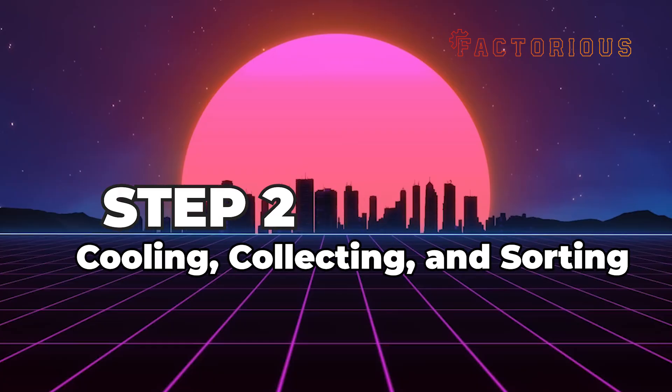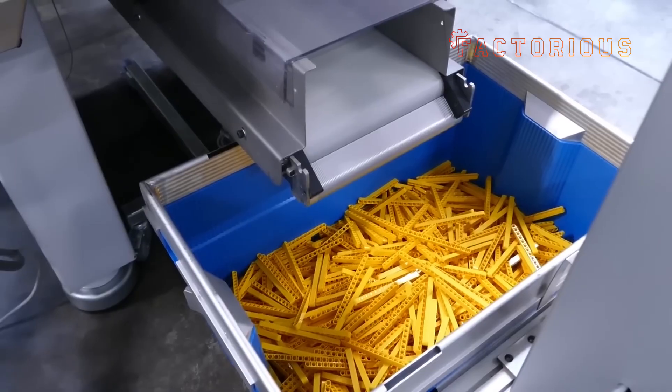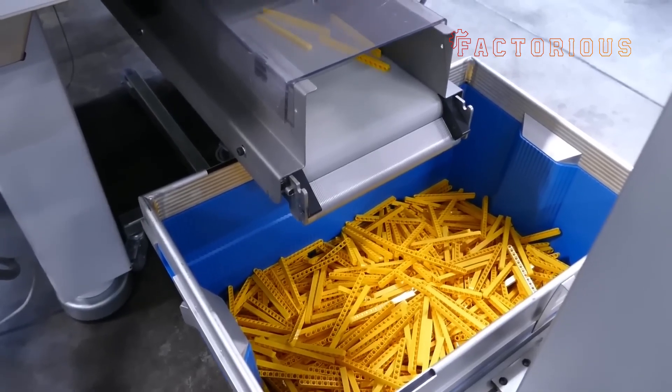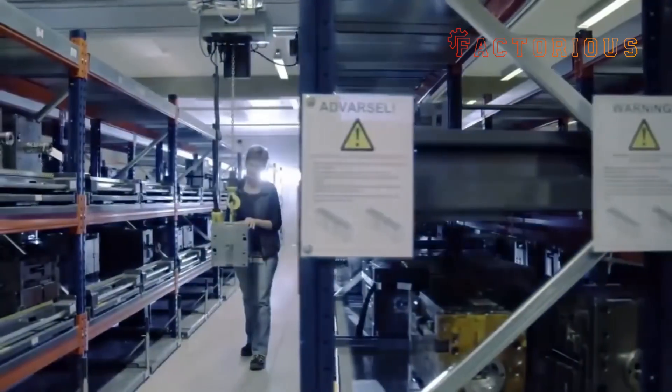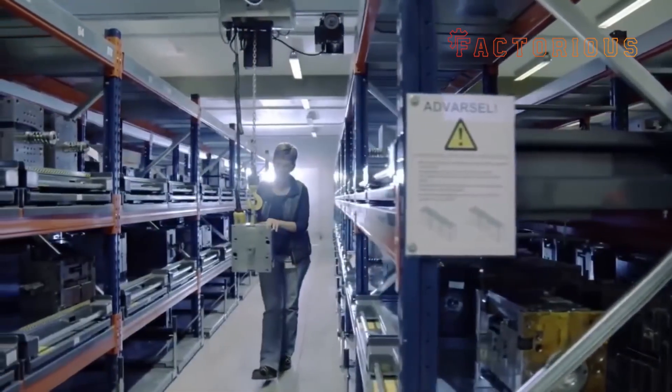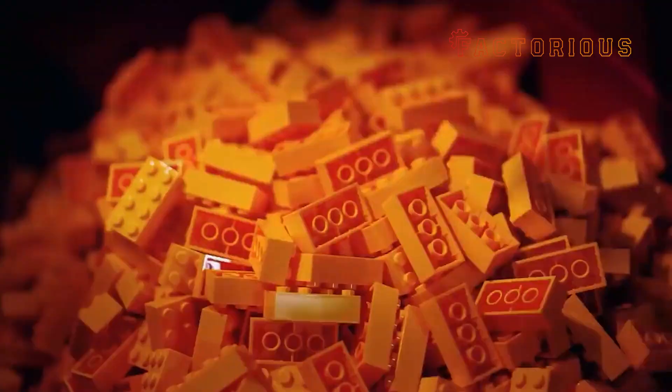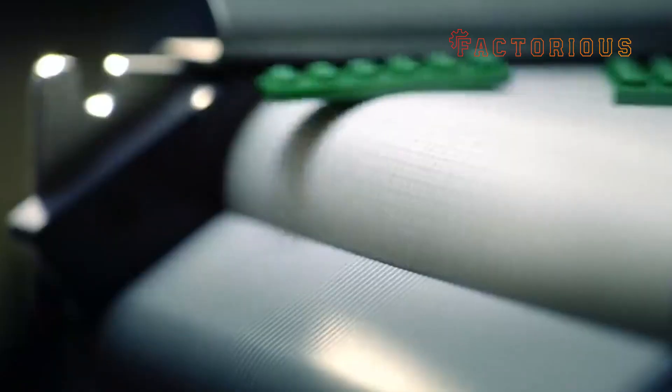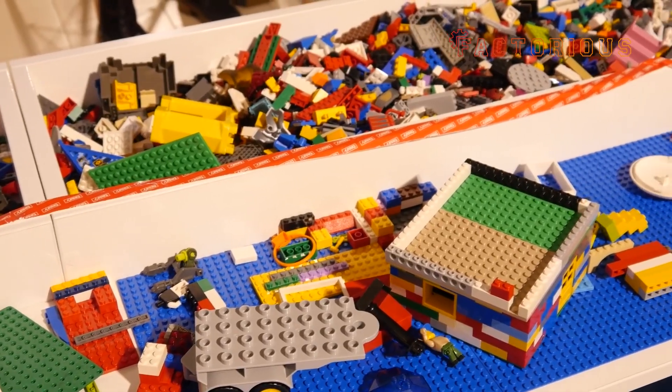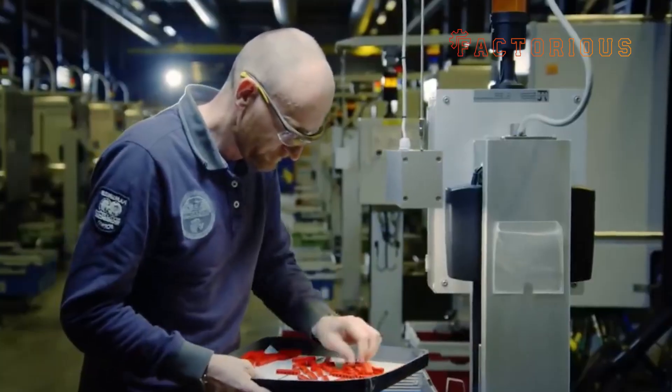Step 2. Cooling, collecting, and sorting. As the bricks come out of the molds, they're automatically collected in bins, each labeled and tracked by the machine's computer system. These machines are so smart that they can sort bricks by type, batch, and even color, ensuring zero mix-ups later.